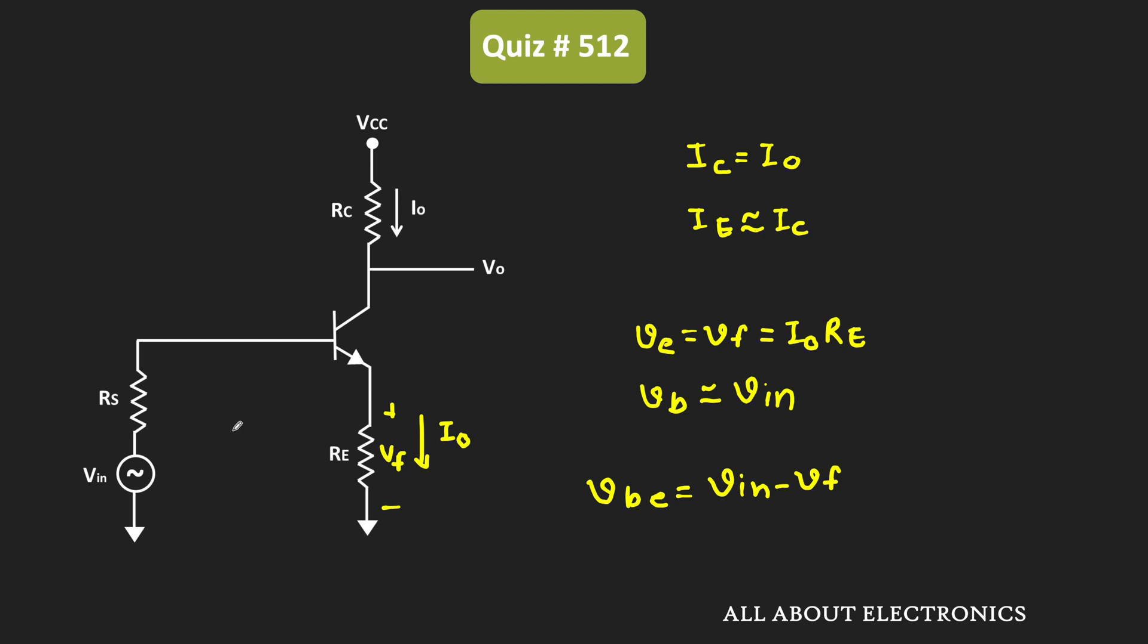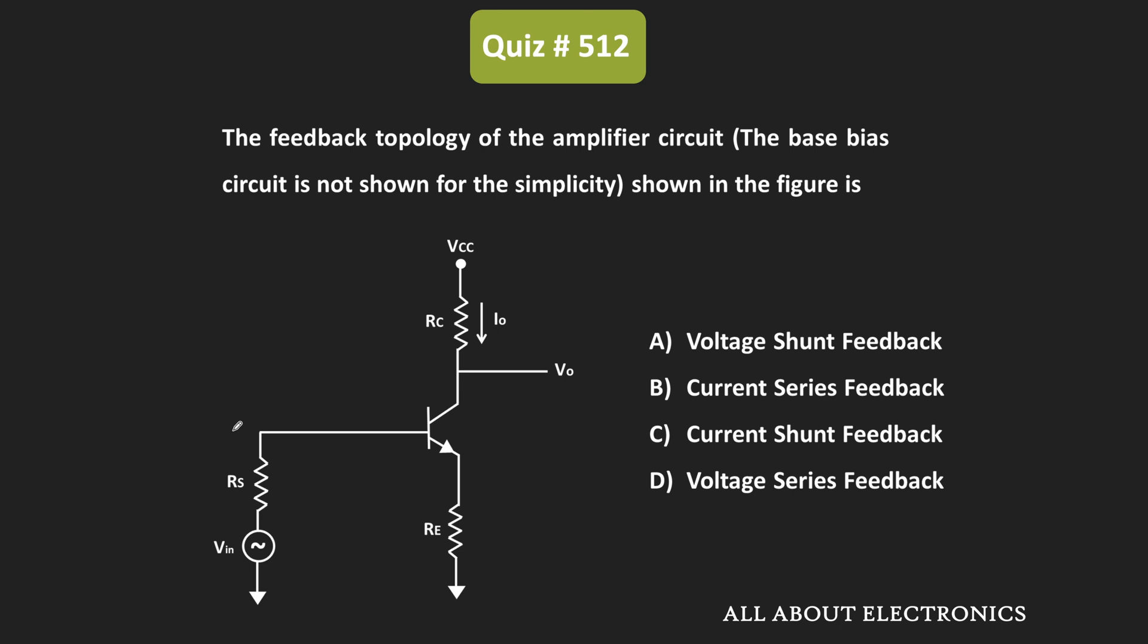So from this, we can say that, for the given amplifier, the feedback topology is the current series feedback. That means here, the output current is sampled, and it is mixed with the input side via the series mixing. And therefore, for the given question, this B is the correct answer.